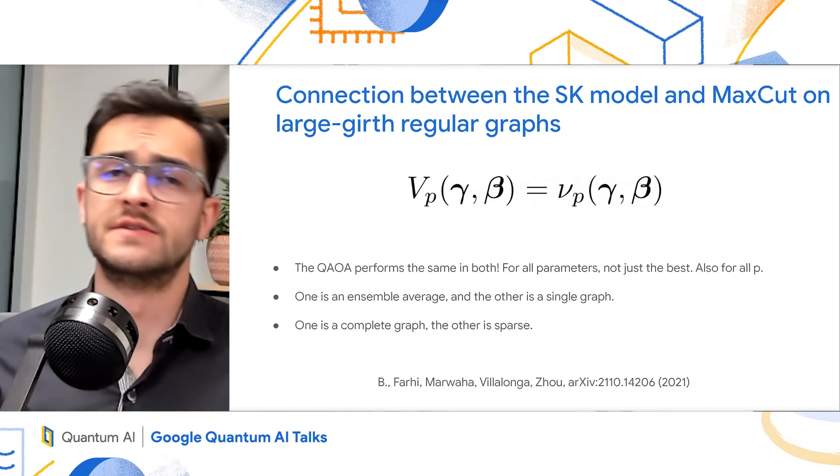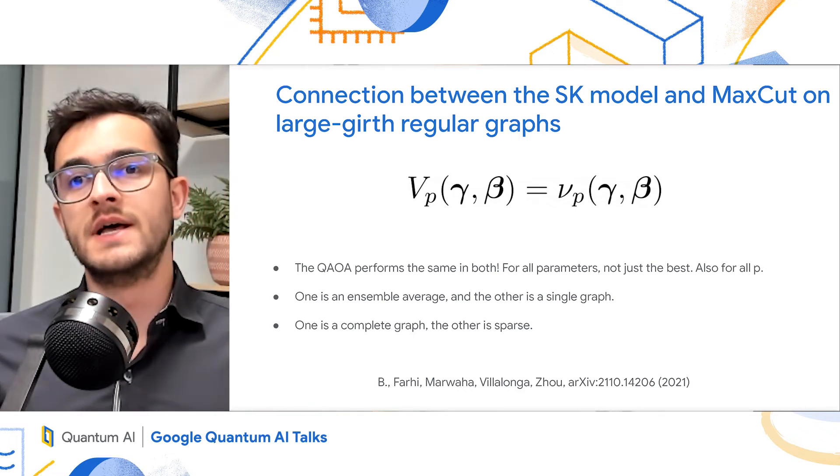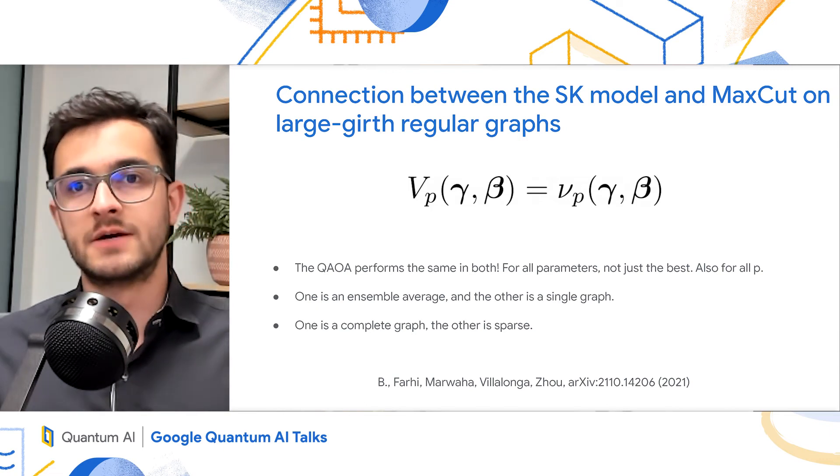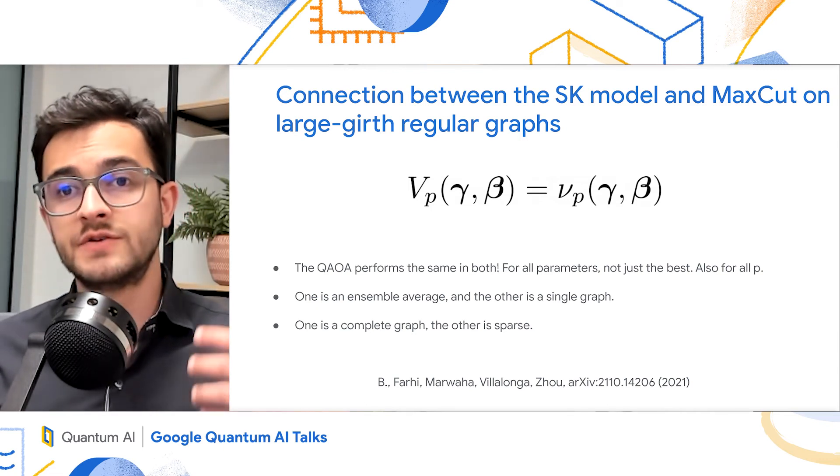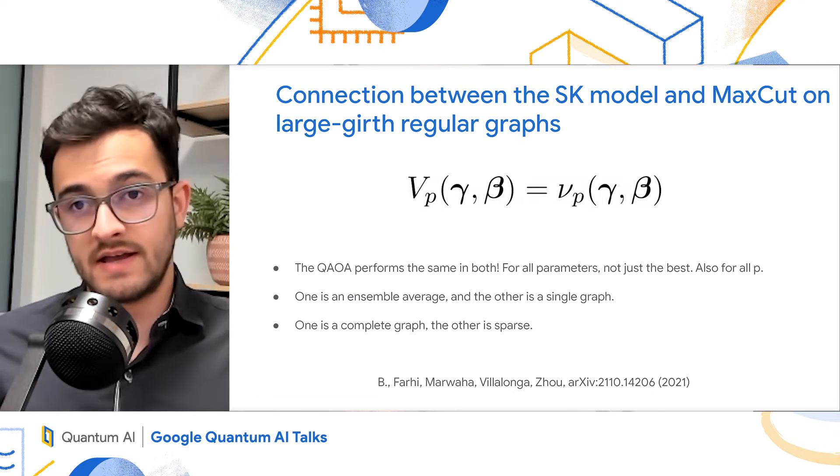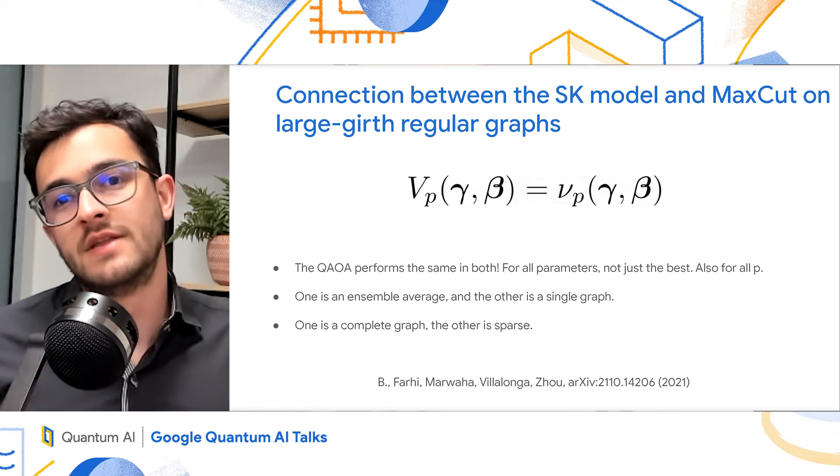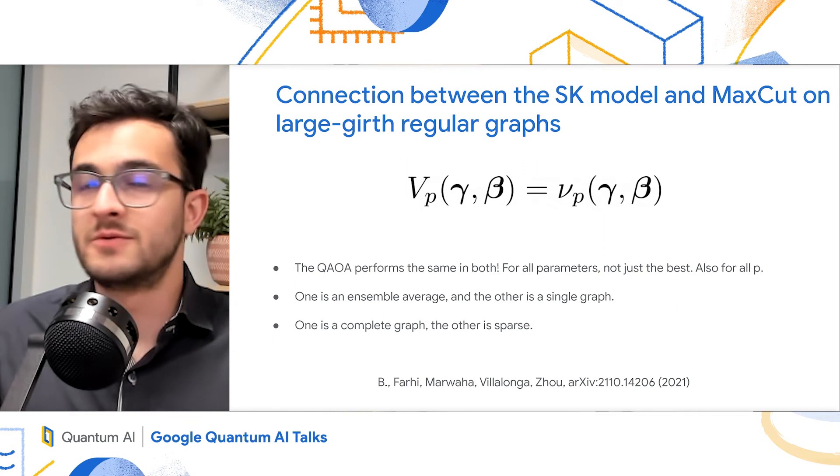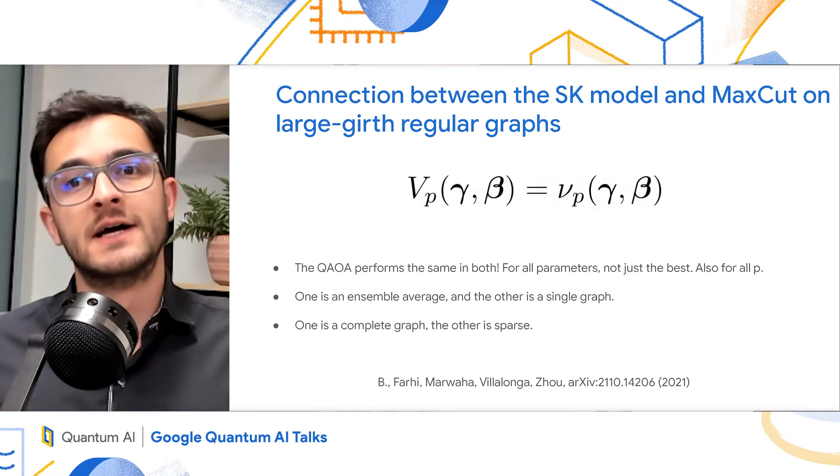And this is surprising for a few reasons. For one, the SK model is a complete graph, whereas on MaxCut, we're talking about sparse graphs. Also, the SK model is actually an ensemble of graphs that we are averaging over. But somehow, you can replace it by a single instance of a graph in the MaxCut case.